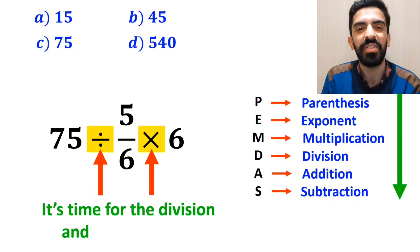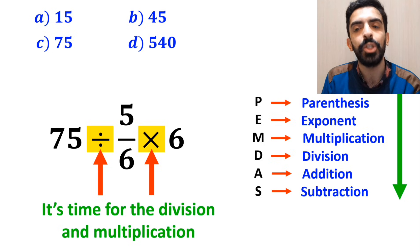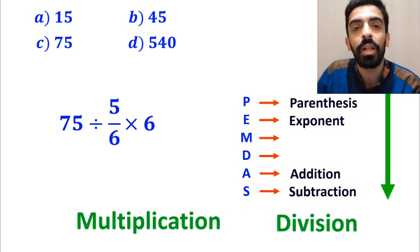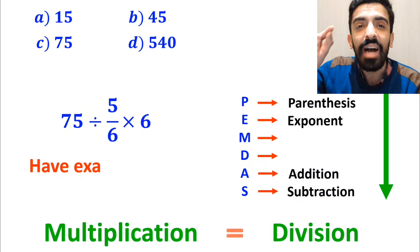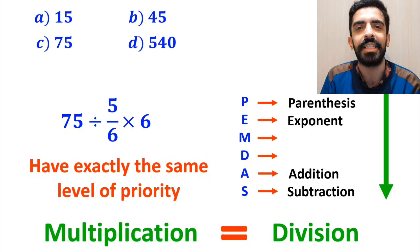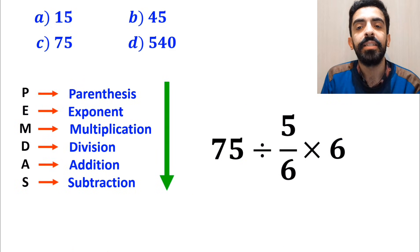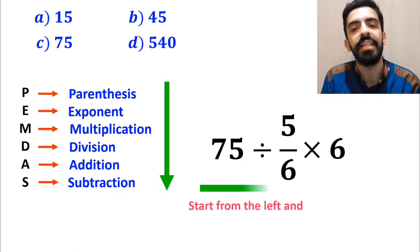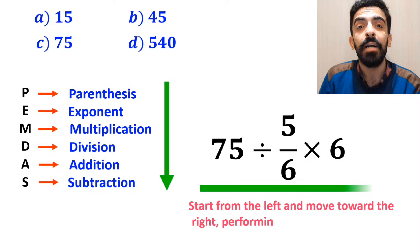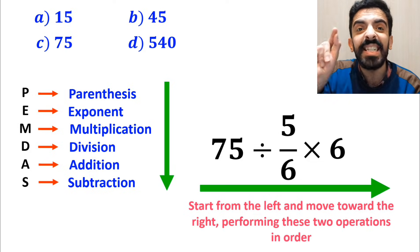Now it's time for the division and multiplication. However, it's very important to note that according to the PEMDAS rule, multiplication and division have exactly the same level of priority. In this situation, the best strategy is to start from the left and move toward the right, performing these two operations in order.